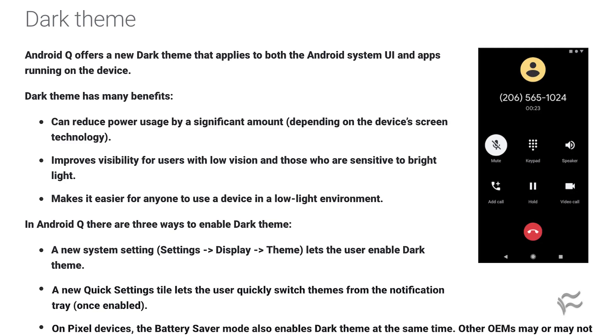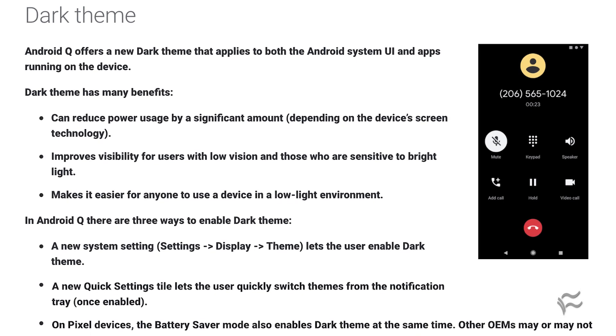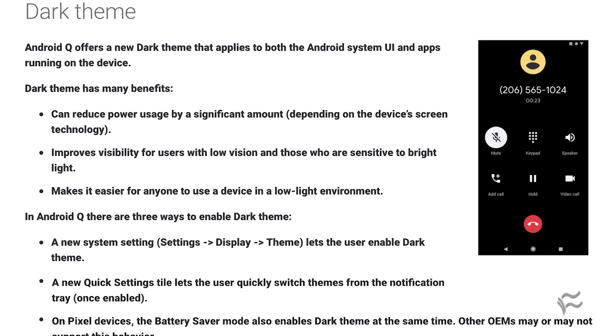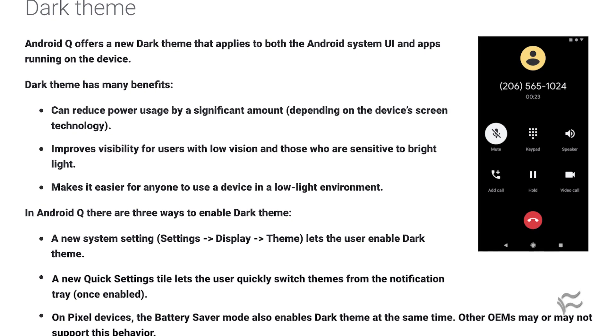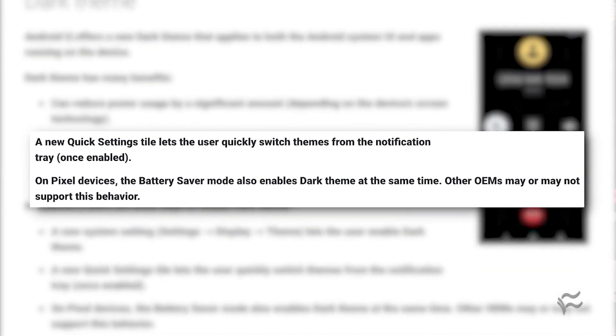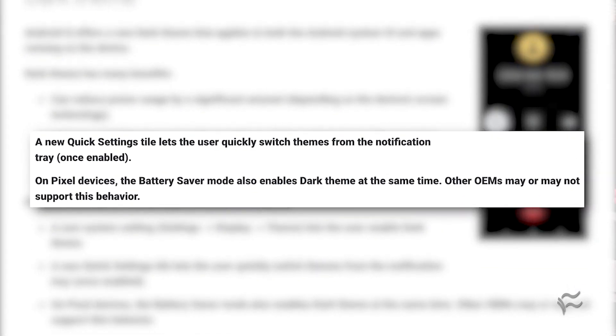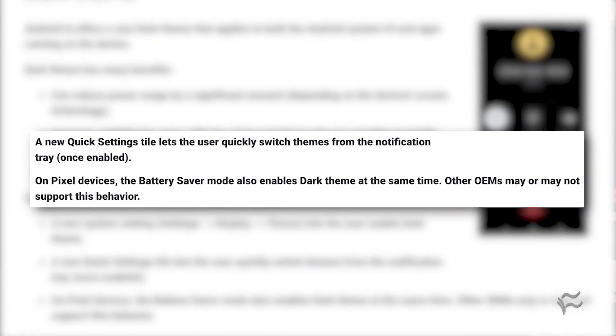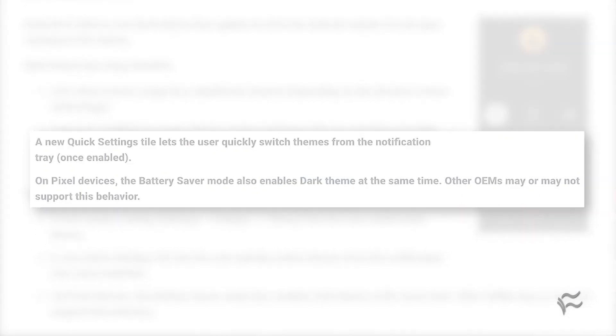But how do you enable this mode? Let me count the ways — two, in fact. Let me show you how. The simplest method is to pull down the notification shade twice and tap Battery Saver. That will automatically switch Android Q to Dark Mode.